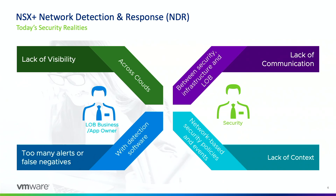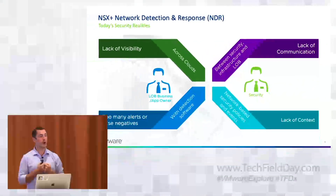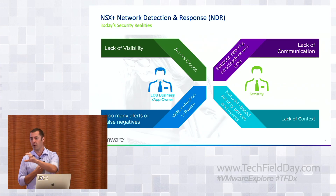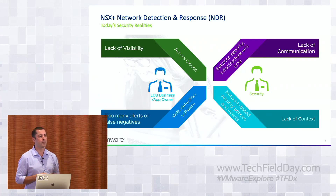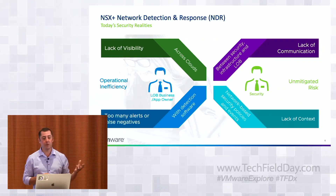Lack of communication also affects policy building. If your security team needs to create a micro-segmentation policy for a critical application, you may have to talk to the application owner, but security teams, networking teams, and application teams often speak a different language. Lack of context delays threat investigation as well — seeing IP addresses communicating on ports doesn't tell you what workload is being targeted or whether an IDPS signature is firing because of a real attack or a vulnerability scan. All of this leads to operational inefficiency and unmitigated risks.